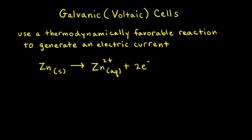In the first half reaction, zinc metal loses two electrons to turn into the zinc two plus cation. Loss of electrons is oxidation. Therefore, this is the oxidation half reaction.